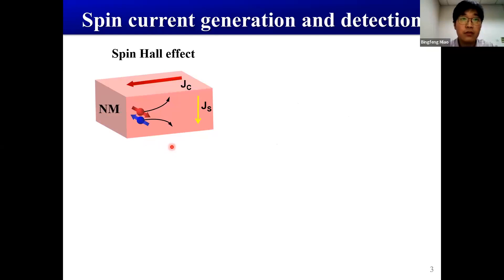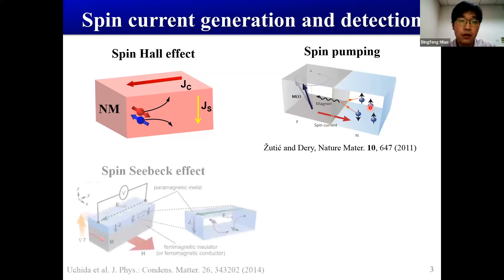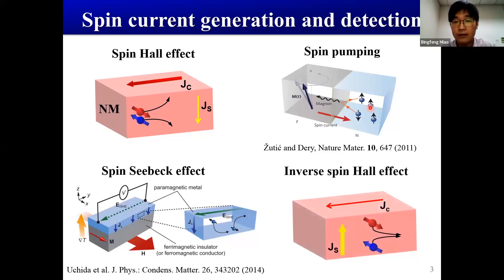There have been many methods to generate pure spin current electronically. When we inject a charge current into a heavy metal, it will result in a transverse spin current where the spin polarization is within the in-plane transverse direction. In a ferromagnet and normal metal bilayer, the precession of the magnetization of the ferromagnet will inject a spin current into the normal metal — this is spin-pumping. A temperature gradient can also drive spin current flow along the gradient — this is the spin Seebeck effect. Detection of pure spin current mostly relies on the inverse spin Hall effect, where a perpendicularly injected spin current results in an in-plane charge current.